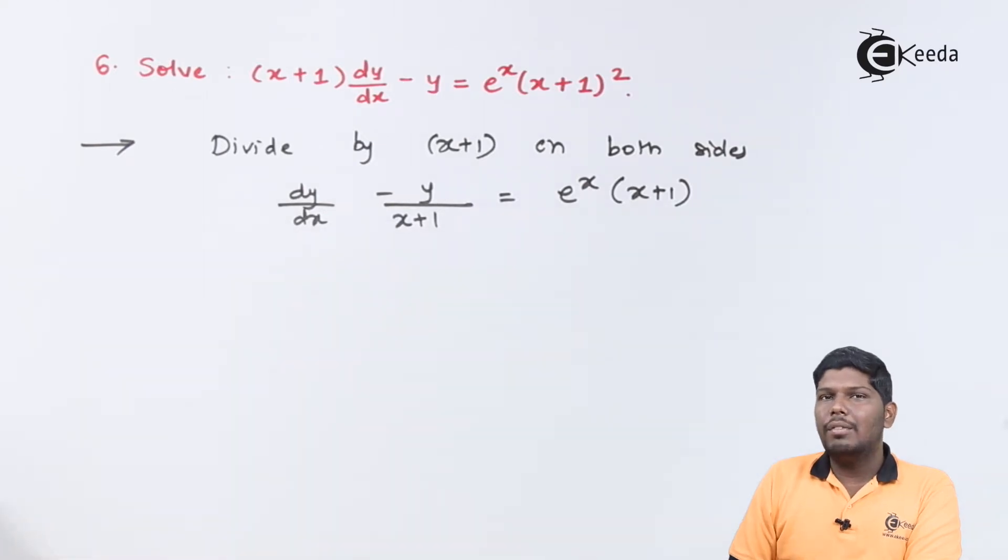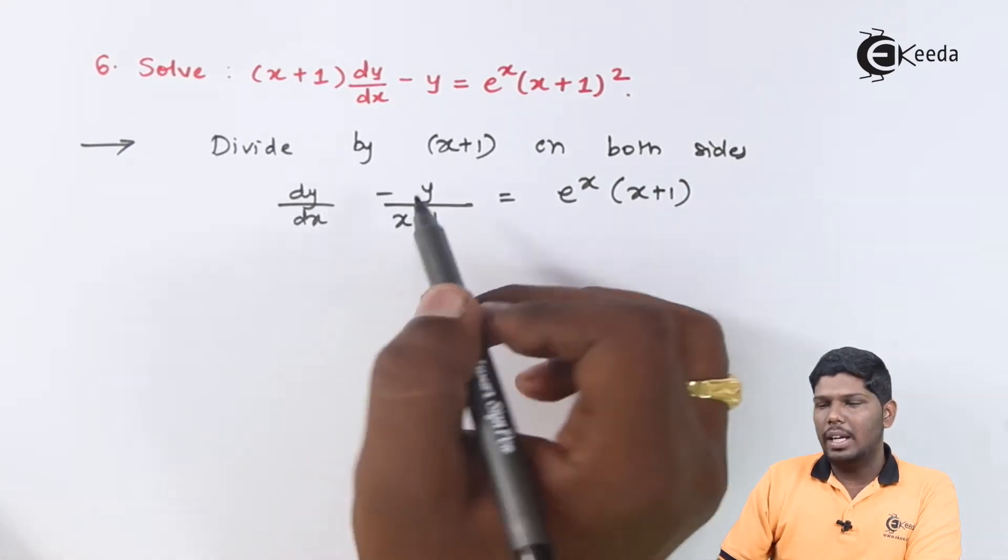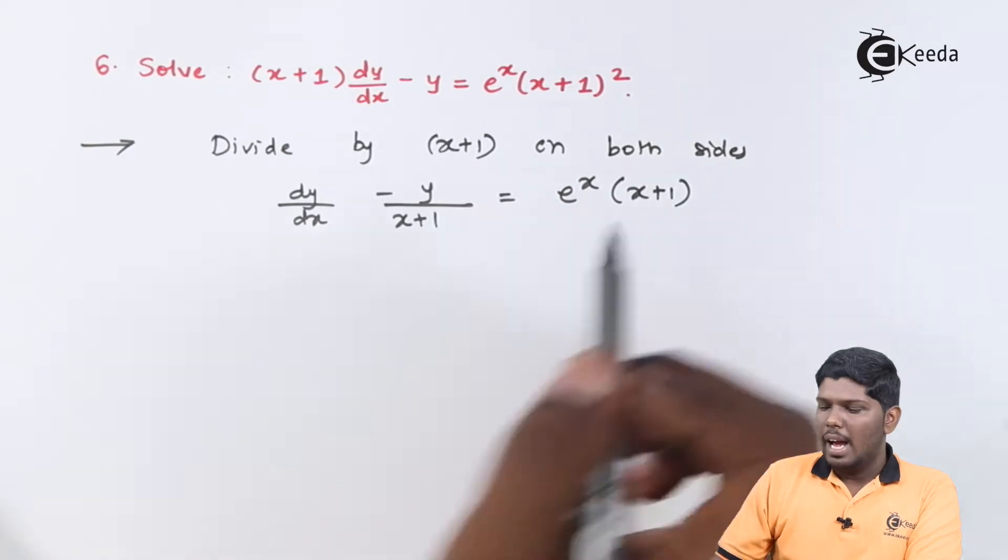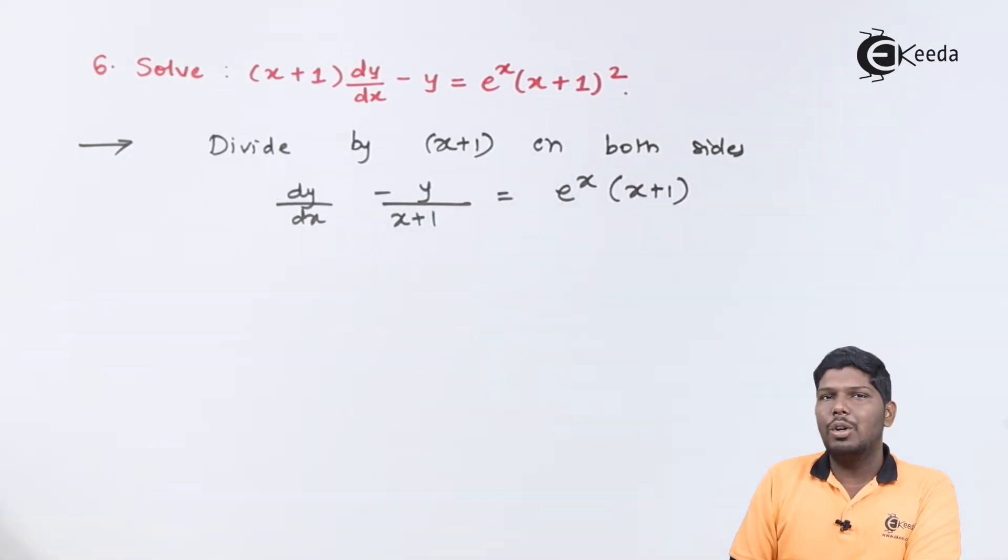The next step will be comparing with the standard form dy/dx + py = q. As you can see the coefficient of y is -1/(x+1), so this becomes the value of p and on the right hand side this will be the value of q.